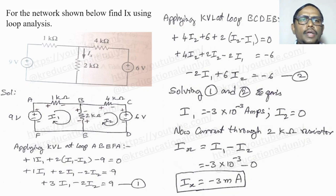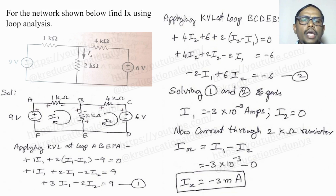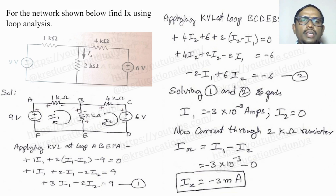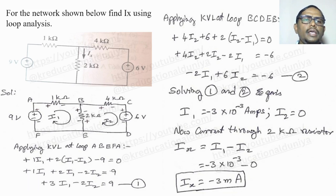The second problem: for the network shown, find Ix using loop analysis. There are two voltage sources given, and we need to find the current Ix flowing in the 2 ohm resistor. We must use loop analysis as specified. First, observe how many inner loops there are — here there are two inner loops.